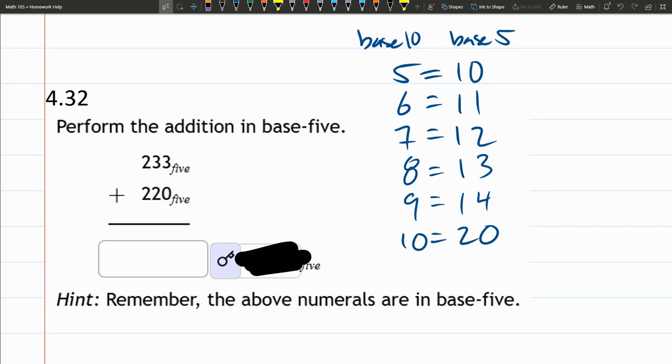So remember in base-5 you write a 5 as a 1 0. In base-10 a 5 is written as just a 5, as you see on the left, but on the right in base-5 you write it as a 1 0 because it's 1 five and then no ones. A 6 in base-10 is written as 1 1 because you have 1 five plus 1 left over.